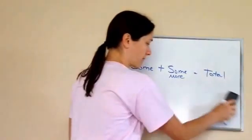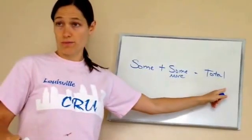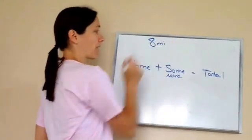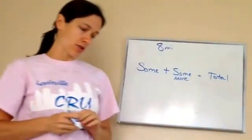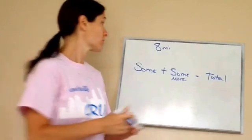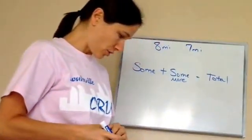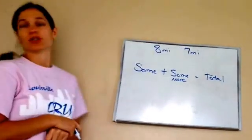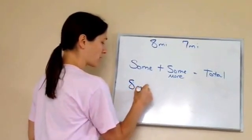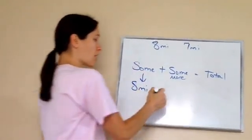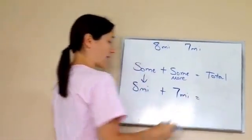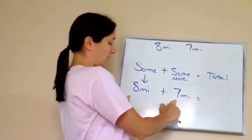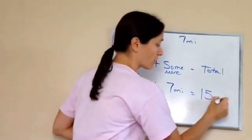Let's try another one. Listen to the story and tell me where our numbers go. The troop hiked eight miles in the morning and seven miles in the afternoon. All together, how many miles did the troop hike? They walked eight miles in the morning — that's my some — plus seven more miles in the afternoon. So the total all together would be 15 miles.